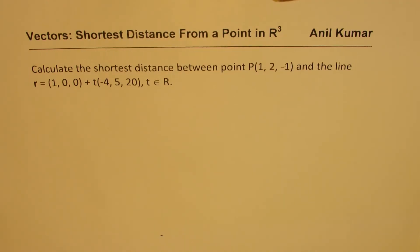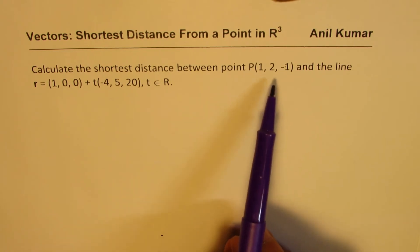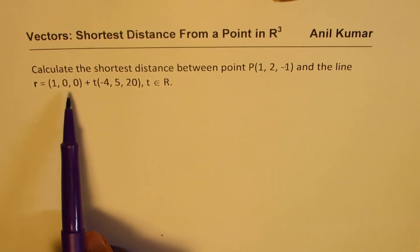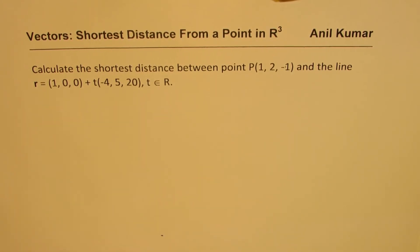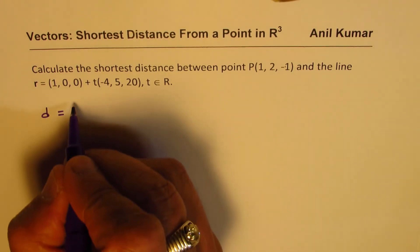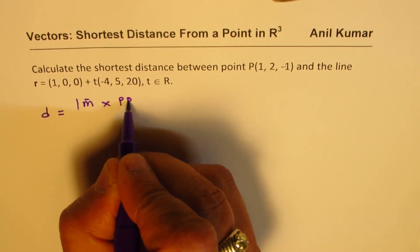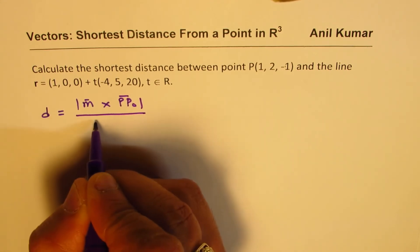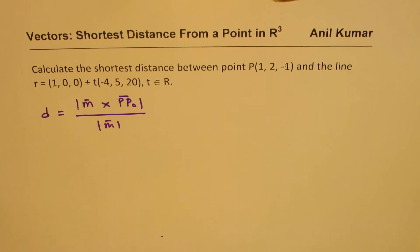Now let us find the shortest distance using the cross product. The question is: calculate the shortest distance between point P = (1, 2, −1) and the line R = (1, 0, 0) + T(−4, 5, 20), T ∈ ℝ. When using the cross product, the shortest distance formula is D = |PP0 × M| divided by |M|.